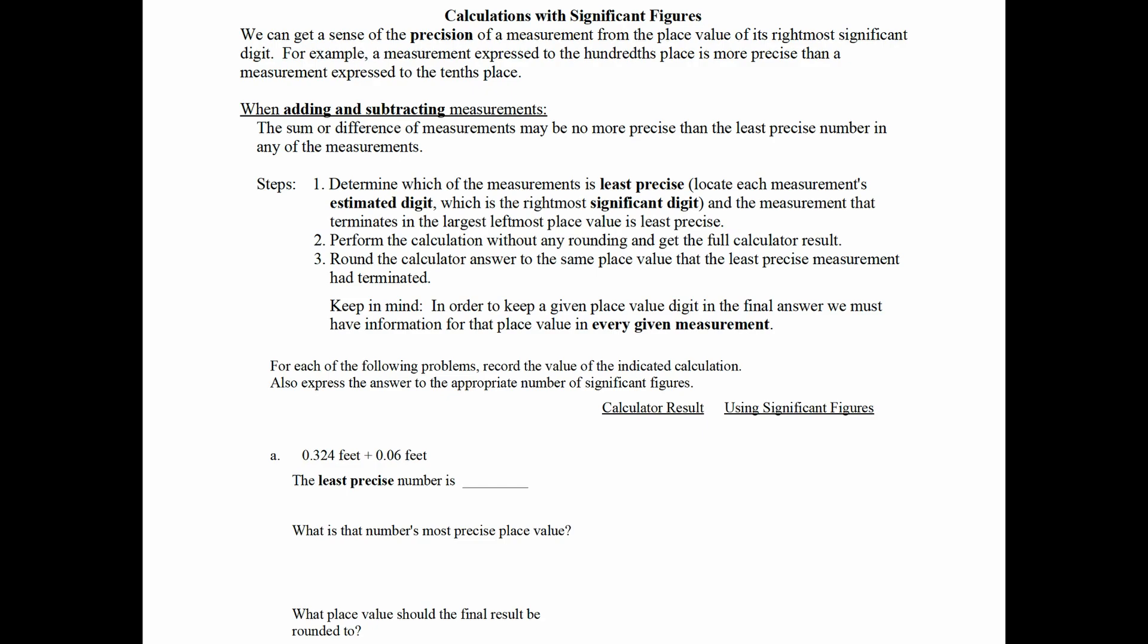Check out the example of .324 plus .06. Which measurement appears to be least precise? The least precise number here is actually the 0.06. The .06 is expressed to the hundredths place and the .324 is expressed to the thousandths place. Now what is that number's most precise place value? The hundredths. And now it asks us, what place value should our final answer be rounded to then? The answer is hundredths.